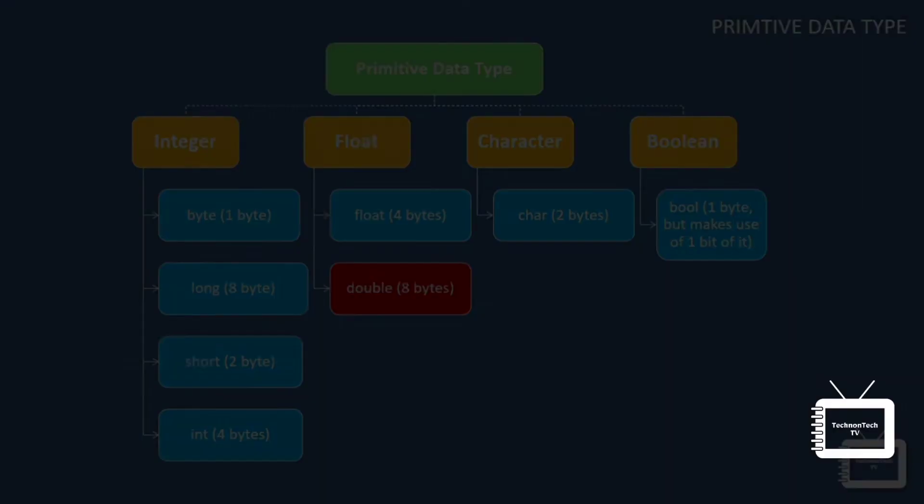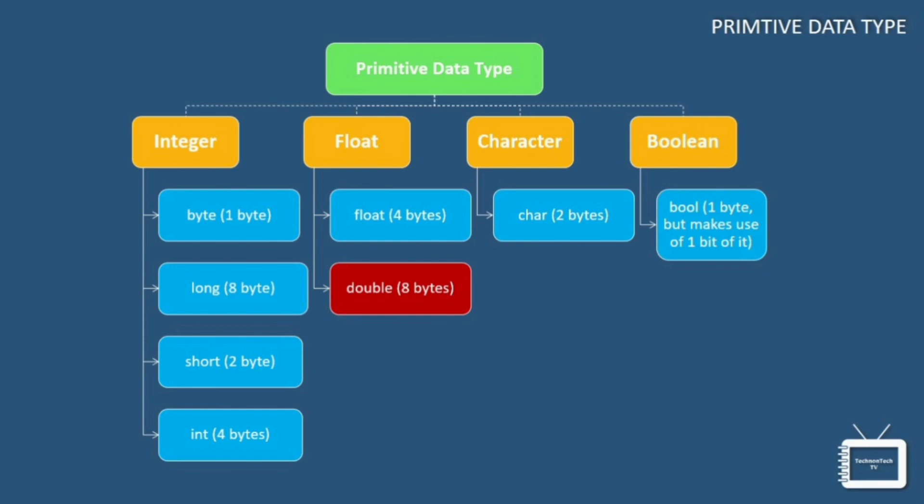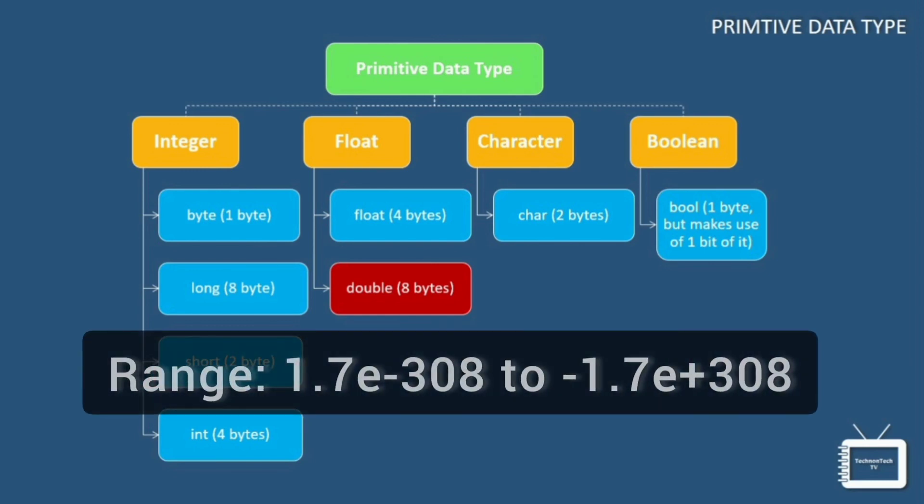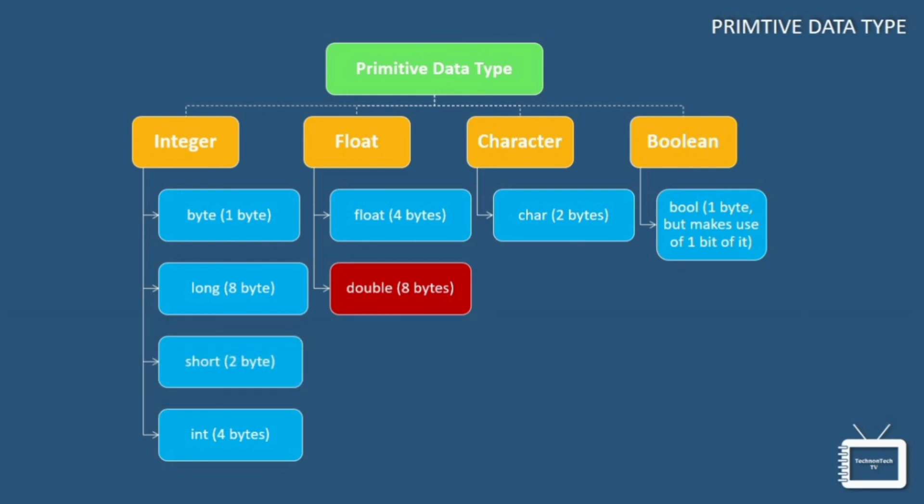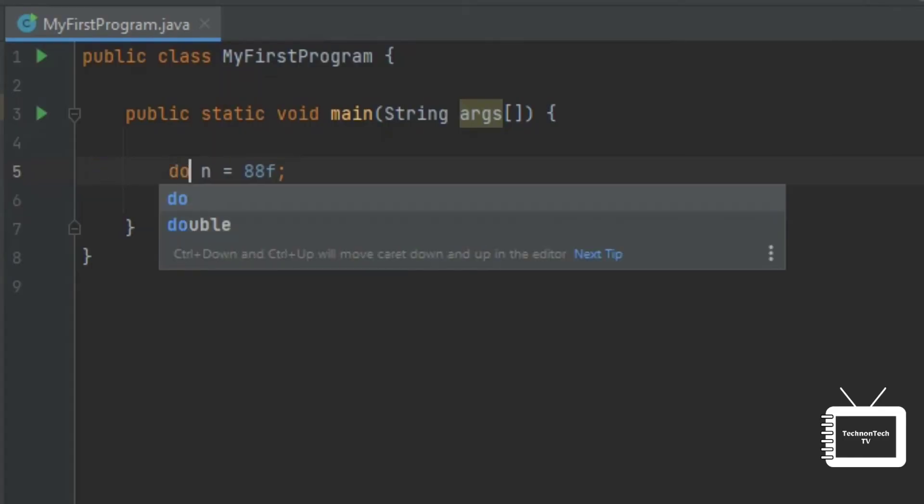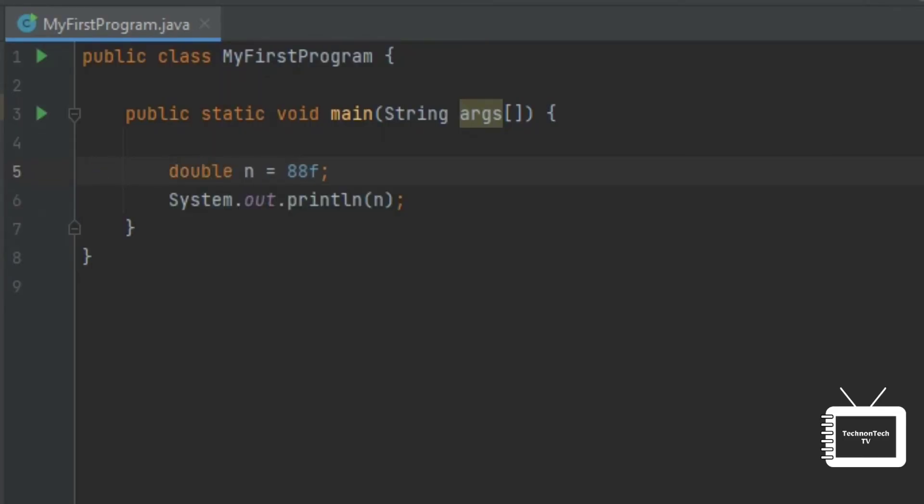Next is double data type. This data type can store fractional numbers from this to this range. Note that you should end the value with a D letter. So let's take an example. So here it will print the value present in n variable. Now let's run the program.